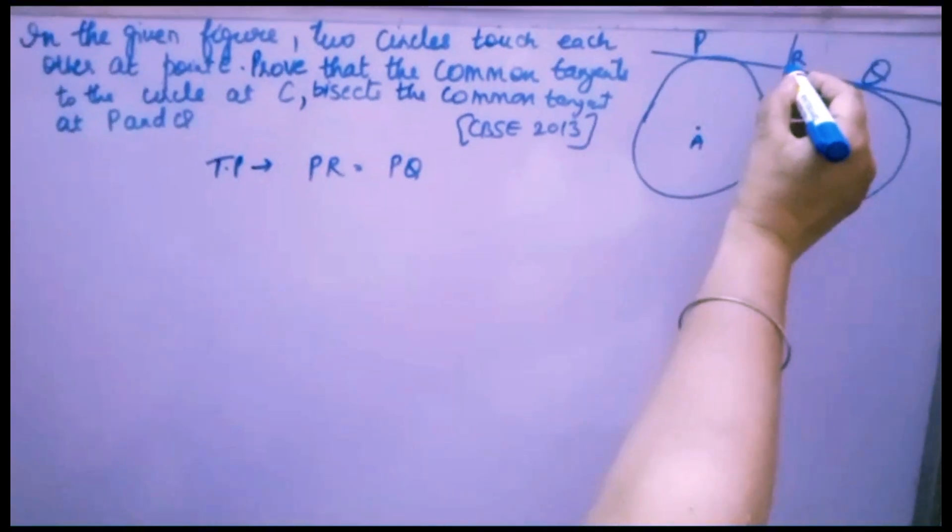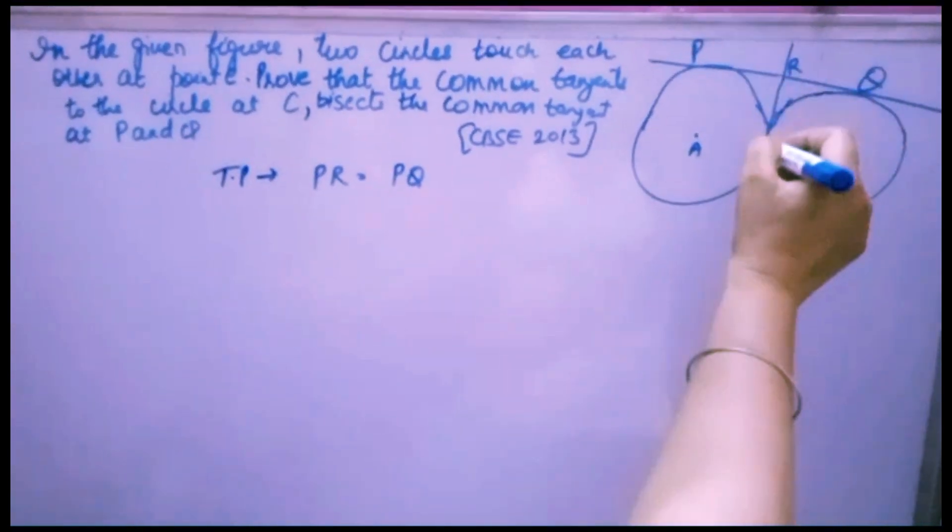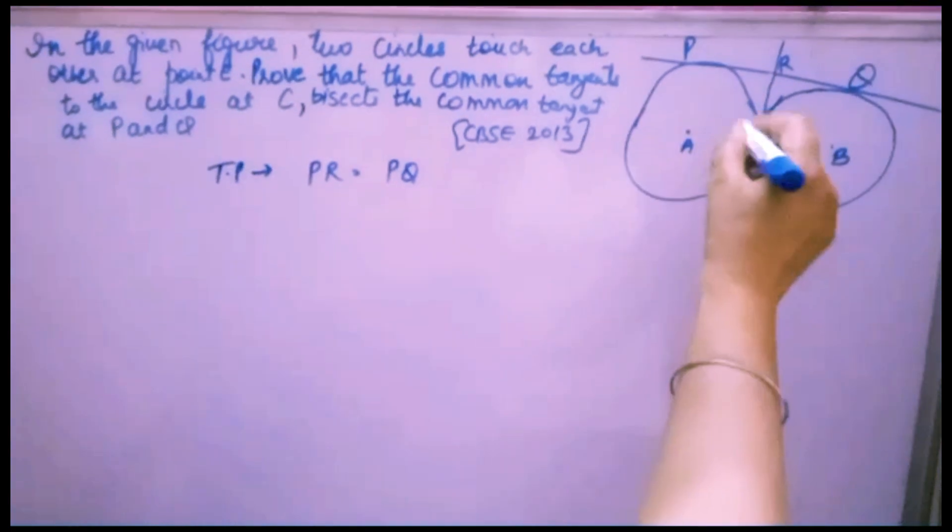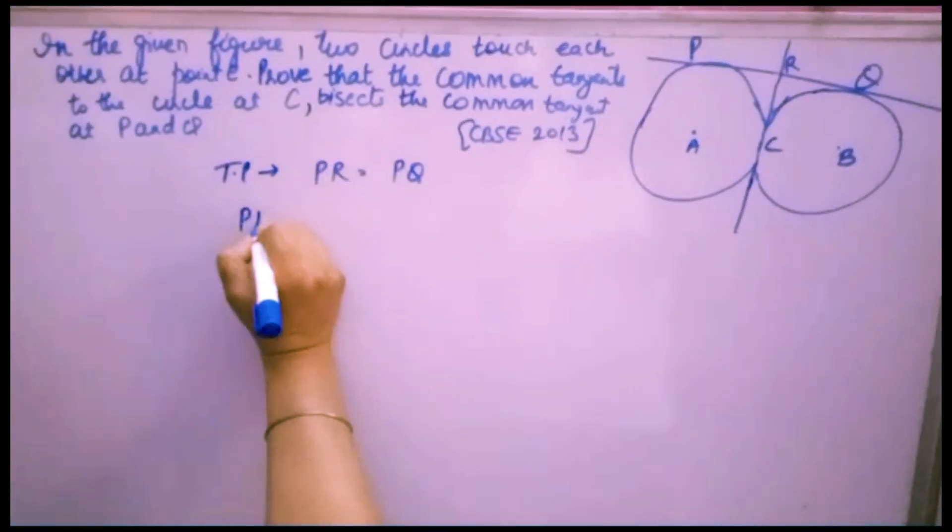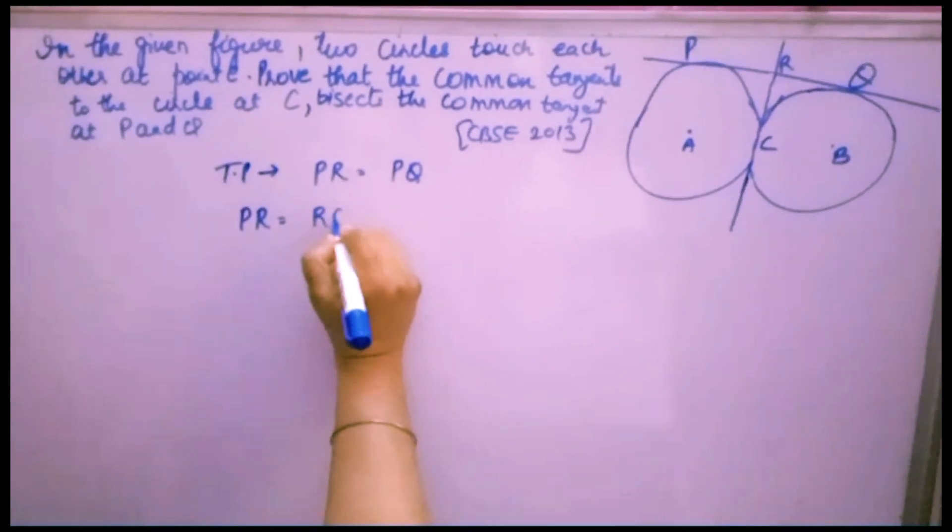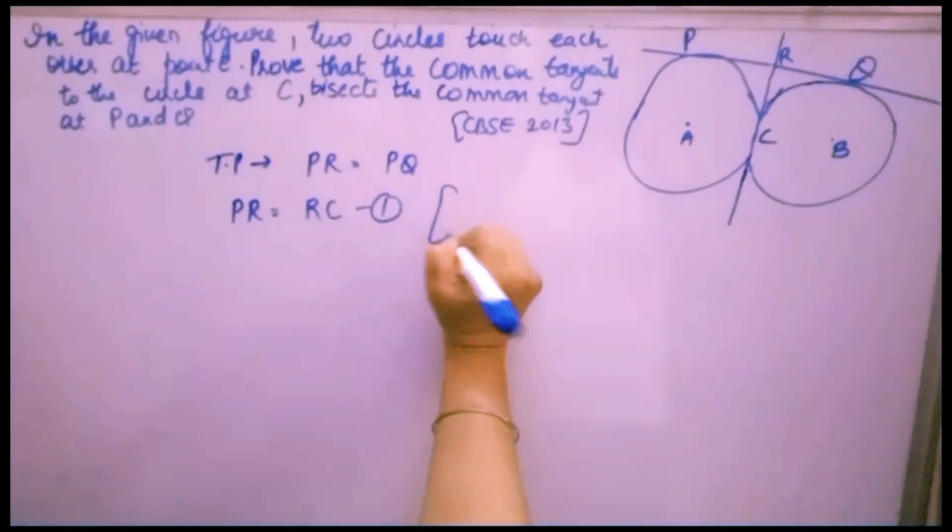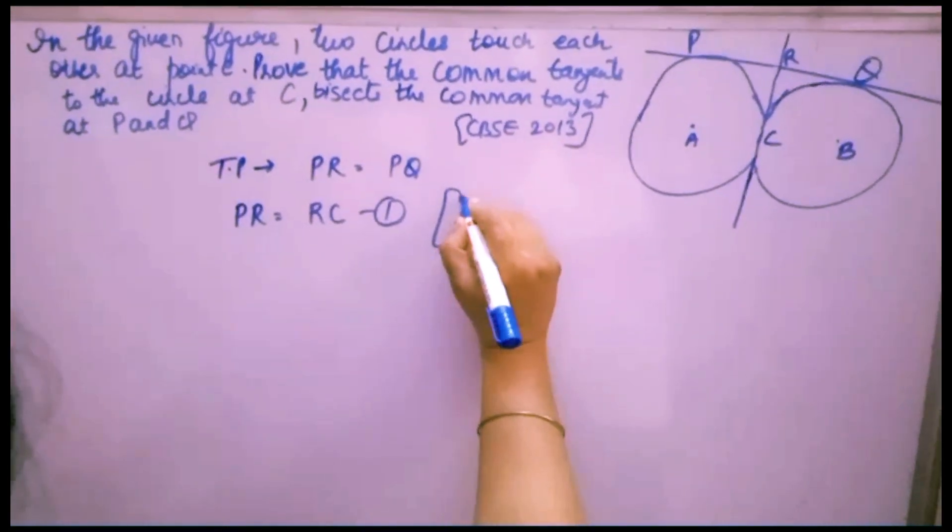R is an exterior point, and PR and RC are the tangents to this circle from exterior point R. Therefore, PR is equal to RC. This is the first equation. The reason is two tangents from the same exterior point R.